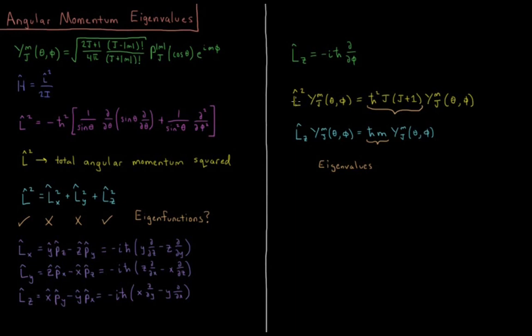If you take any of these given wavefunctions and you act on them with L-squared, you should find that you'll get h-bar squared j times j plus 1 times the function back. If you act on any of the spherical harmonics with Lz, you should get h-bar m times the function back. So these eigenvalues tell you what the total angular momentum squared is and what the z-component of the angular momentum is.